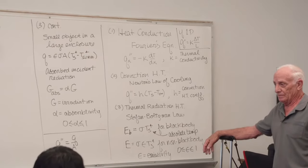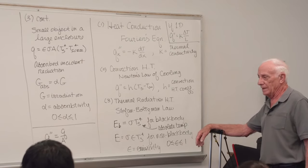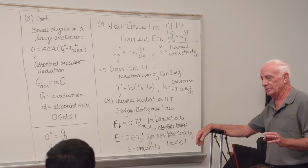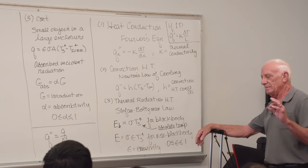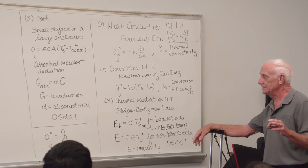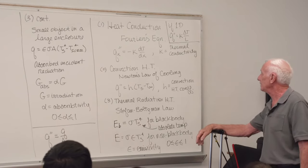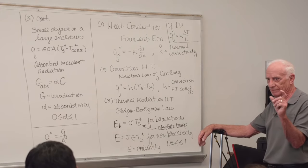The general one-dimensional form is Qx double prime. Double prime means per unit area, surface area, minus k dT dx. K is a property of the material called thermal conductivity. If it's one-dimensional heat transfer, the equation becomes a bit simpler because you can replace the differential dT dx by delta T over delta X. So the equation becomes Q double prime equal k delta T over L.